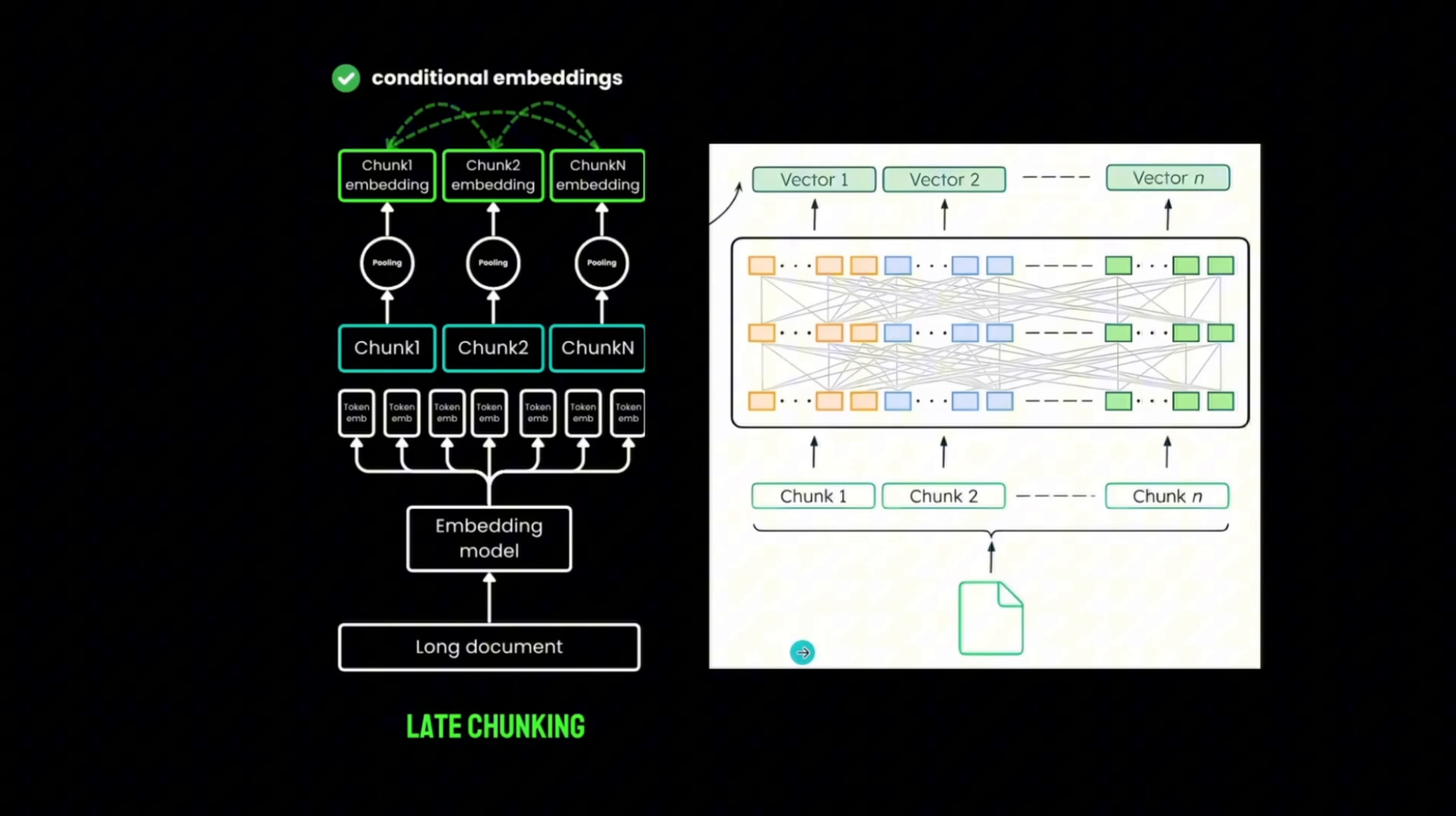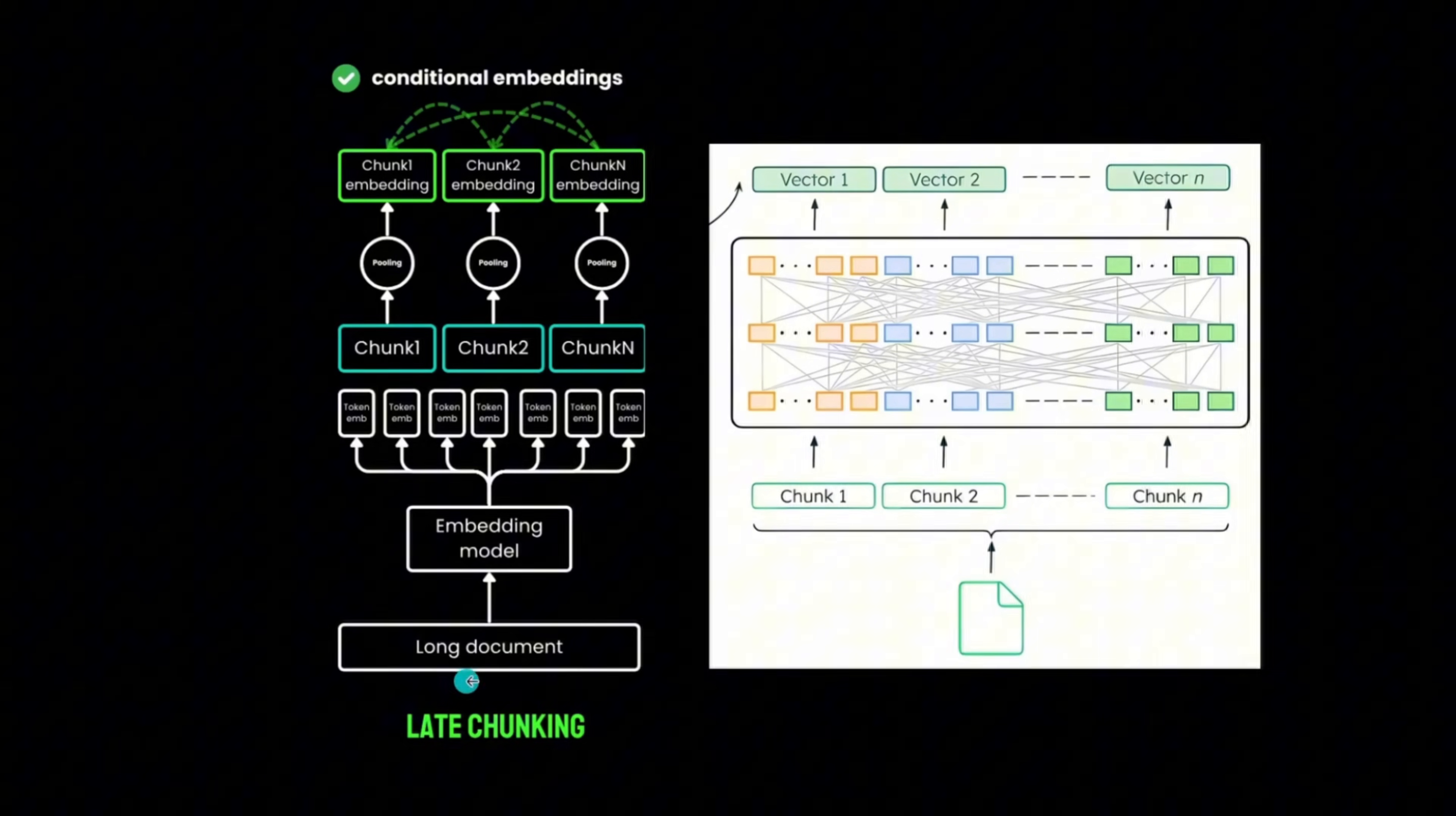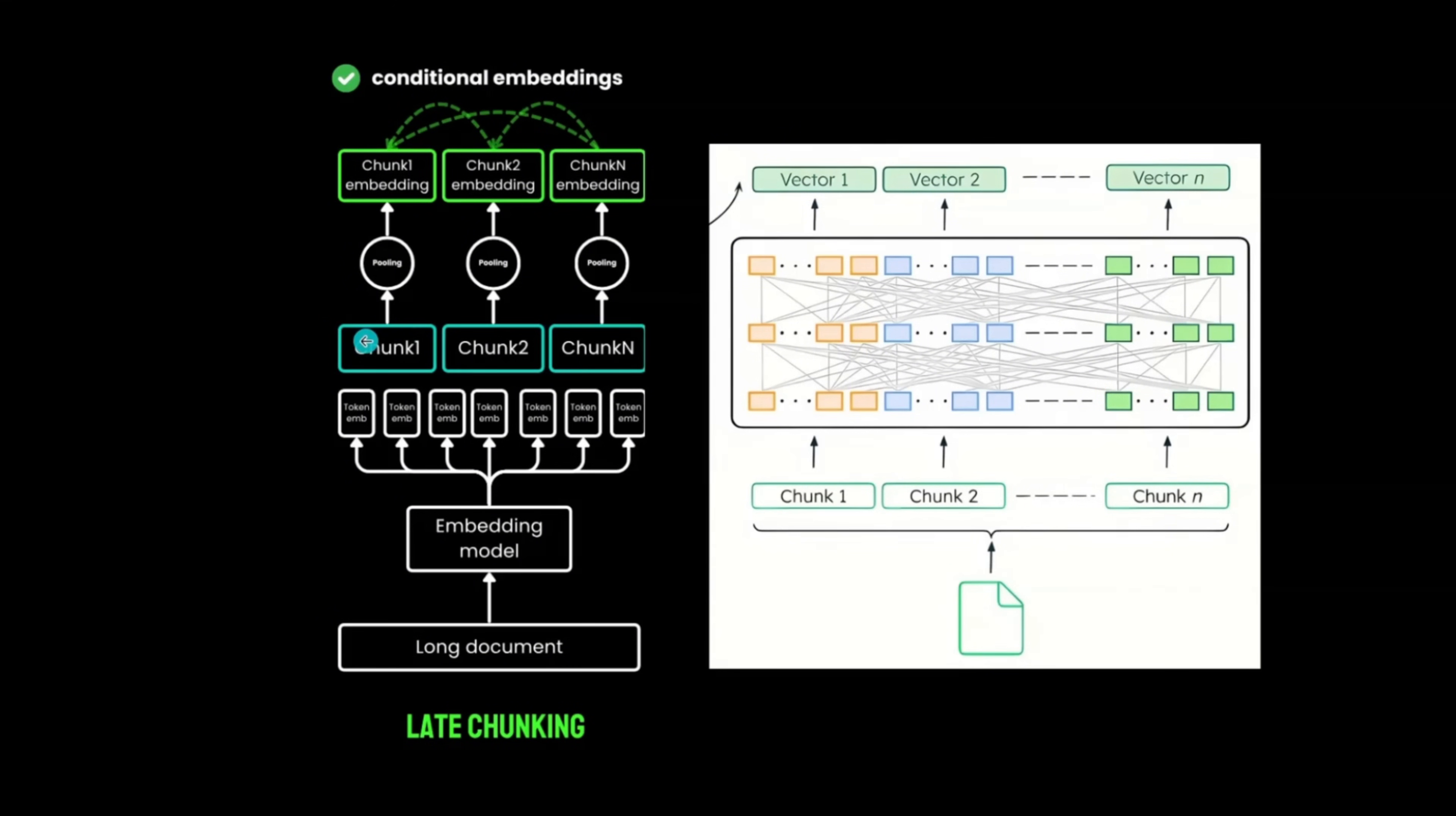How is this different from late interaction, or late chunking? In late chunking, we compute embeddings on document level. And then we create vectors based on chunk levels. In this case, we initially divide each document into chunks, and then compute embeddings, while preserving the global information.